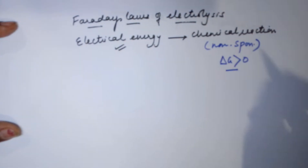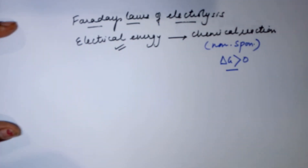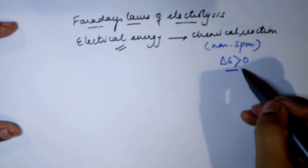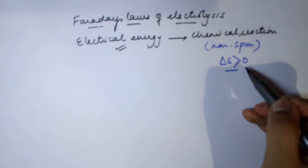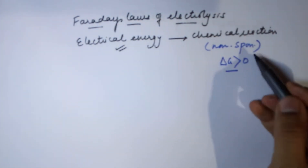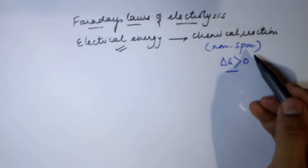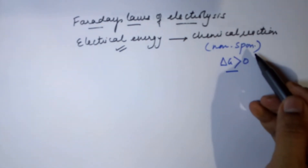Let me give you a recall. From the thermodynamics chapter, you have done Gibbs free energy. This Gibbs free energy used to be a positive value for a non-spontaneous process, a negative value for a spontaneous process, while the value was zero when the reaction was at equilibrium.